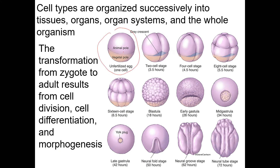Once the egg gets fertilized and does mitosis, you have a two-cell stage, a four-cell stage, an eight-cell stage, and so on. Then, only 72 hours later, we already have a neural tube developing. For all of that we need cell division — we did a whole unit on mitosis — and then we'll talk briefly about cell differentiation and morphogenesis, and then the genes that cause these things to happen.